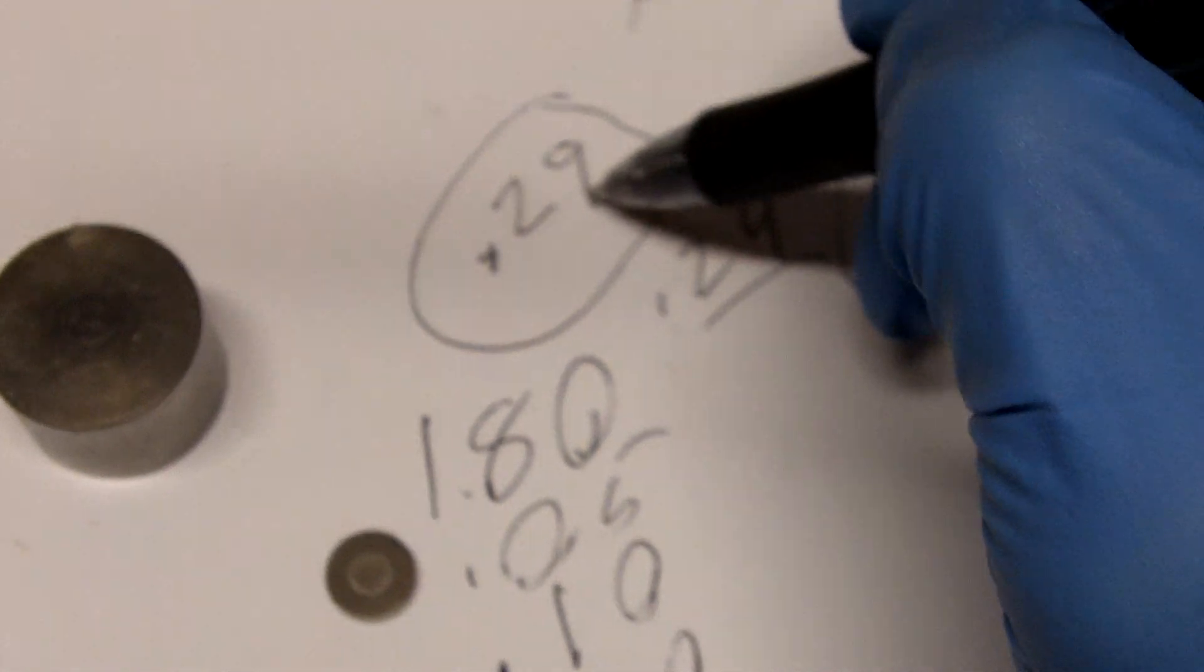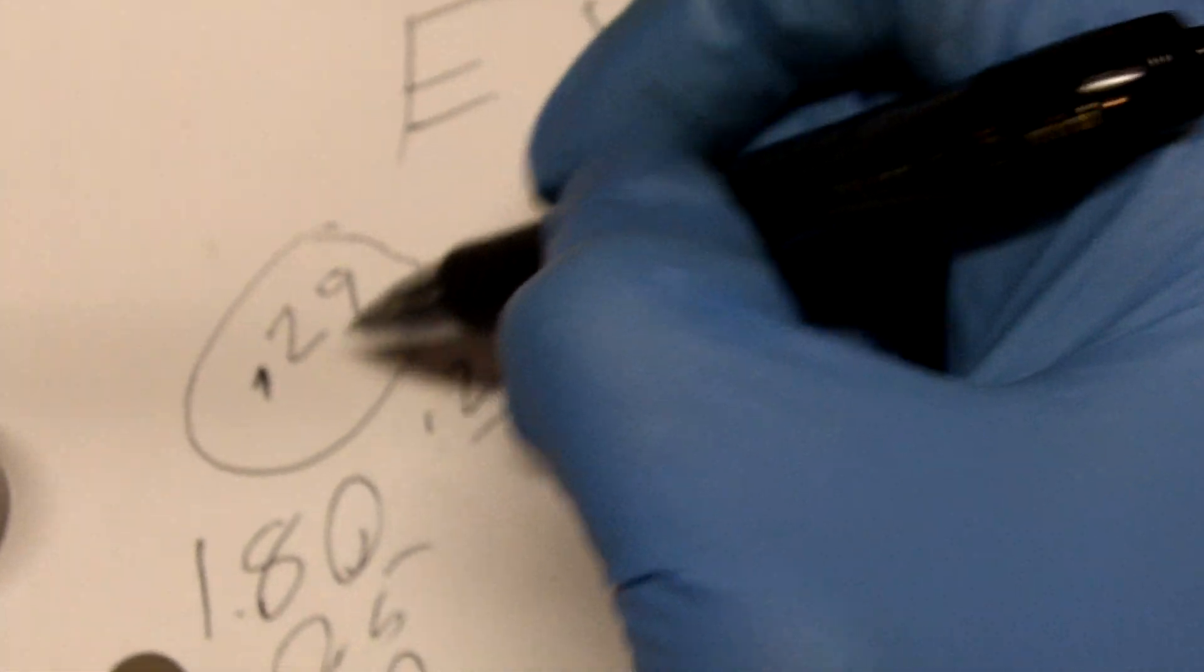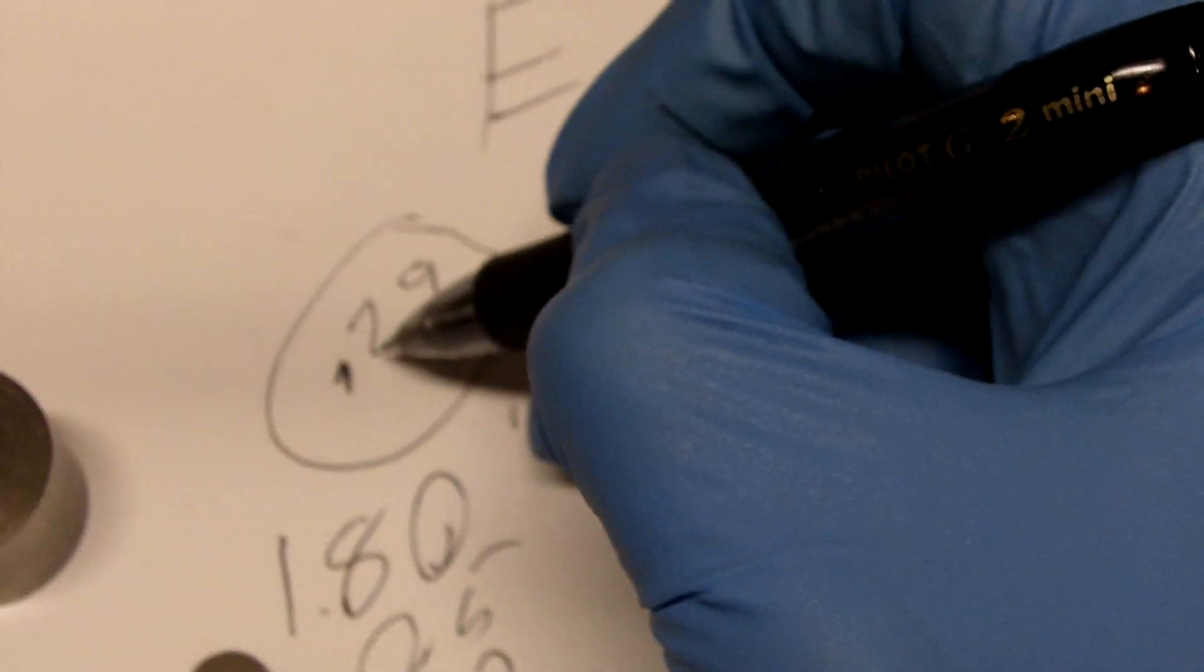We're going to just put a fictitious number down here. We're going to say that this valve here clearance was .29 millimeter. Again, the tolerances are .20 to .25 millimeter. So what we got here is a .29.